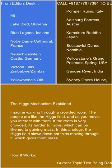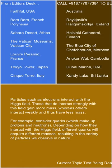How it works: particles such as electrons interact with the Higgs Field. Those that interact strongly with this field gain more mass, whereas others interact weakly and thus have less mass. For example, consider quarks, which make up protons and neutrons. Depending on how they interact with the Higgs Field, different quarks will acquire different masses, resulting in the variety of particles we observe in nature.